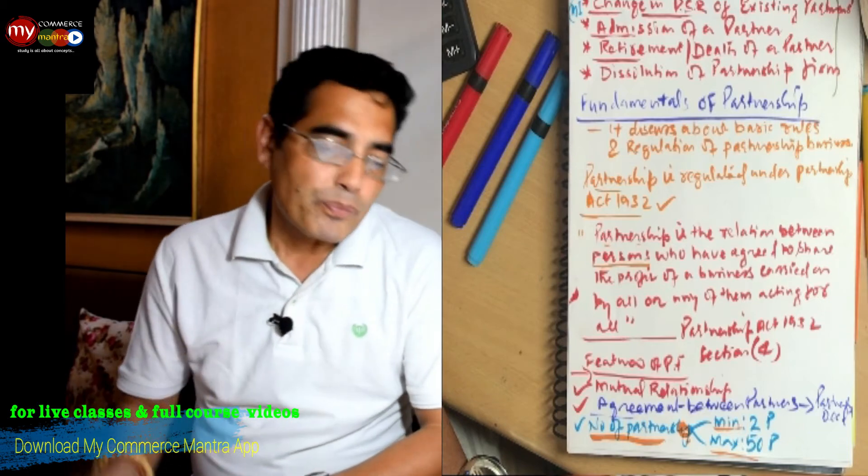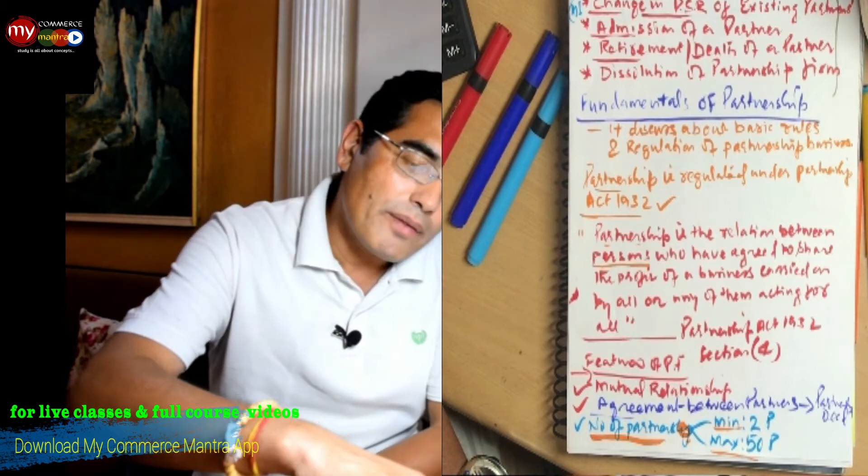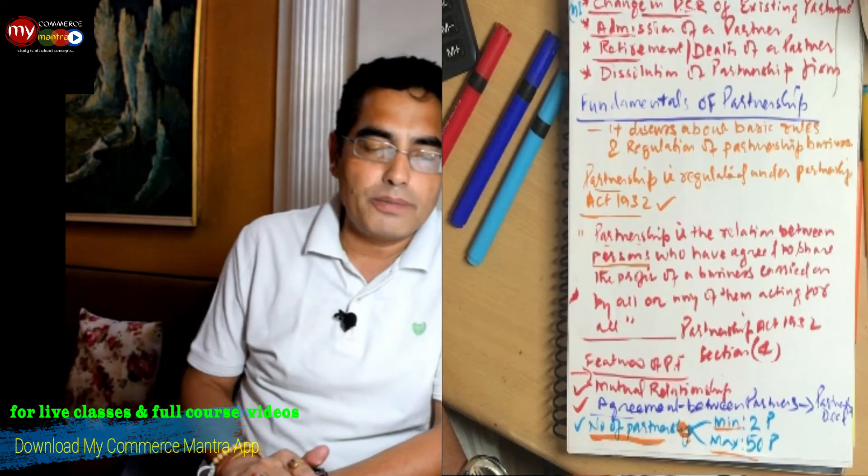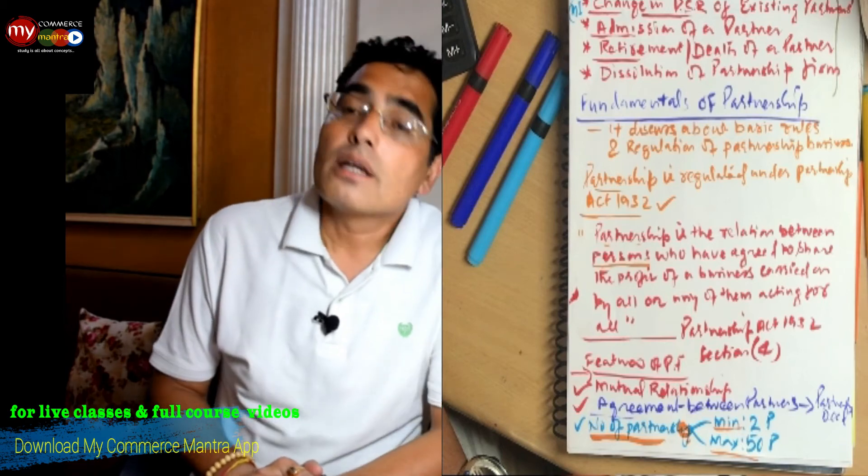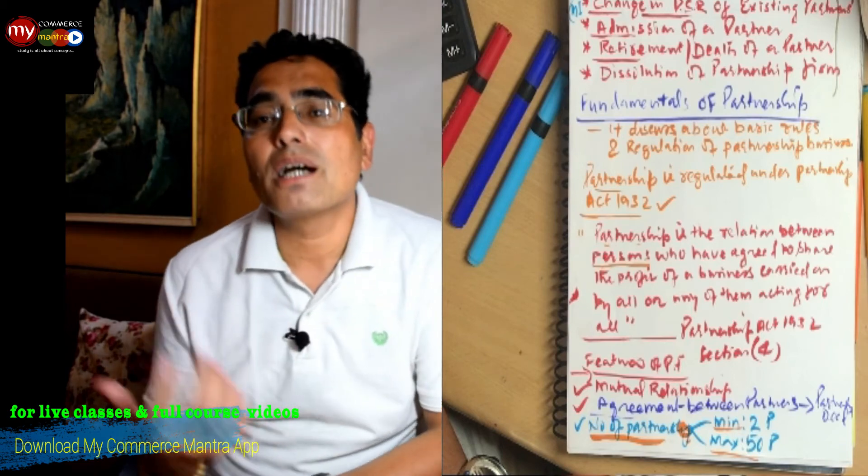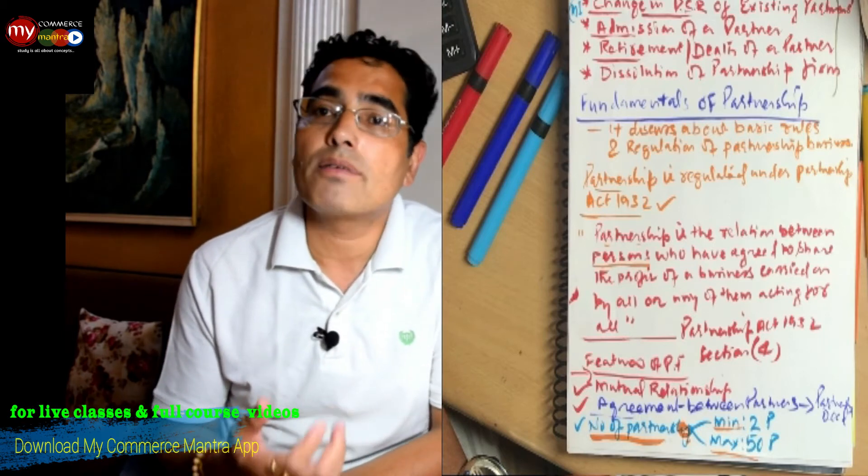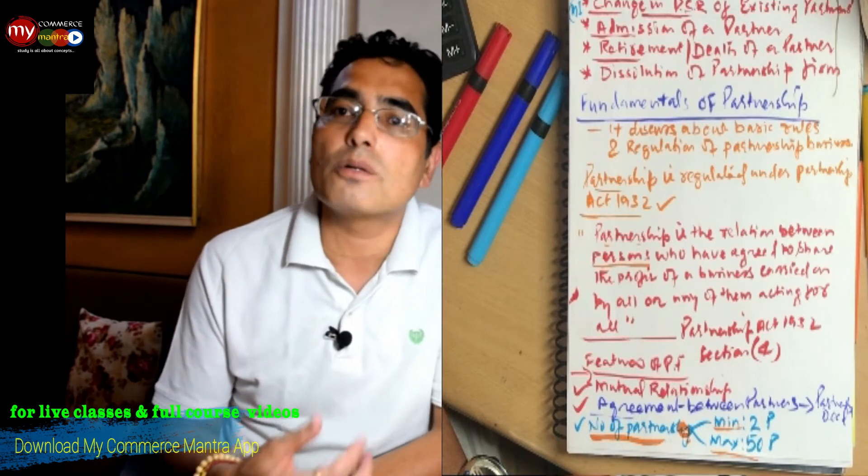Next, 'who have agreed to share the profit of a business carried on by all or any of them acting for all.' This means all of them have the right to run this business. They all have right to take active part in the business operations.